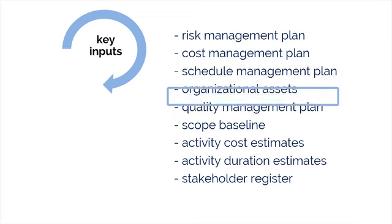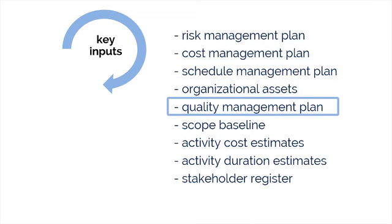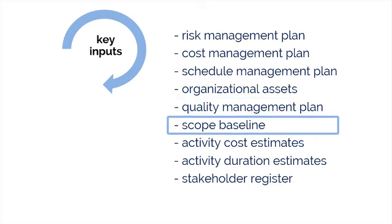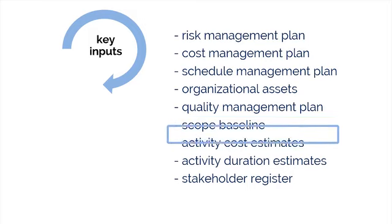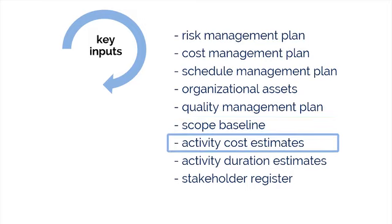Quality management plan — this gives us some measures and metrics for identifying risks. Scope baseline — project assumptions are found in the project scope statement, and uncertainty in project assumptions should be evaluated as potential causes of project risk. Activity cost estimates — this ties our expectations of how much the schedule activities for the project create individual or overall risk. These figures are usually expressed as a range, letting us know whether the estimate is or is not enough to complete the activity.